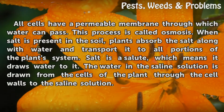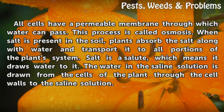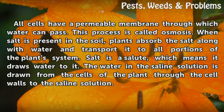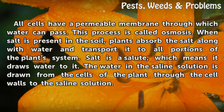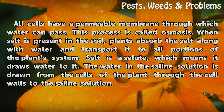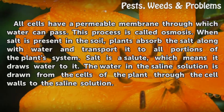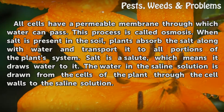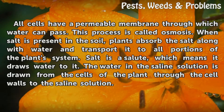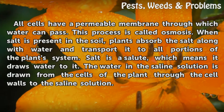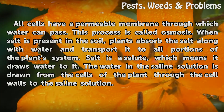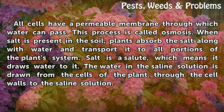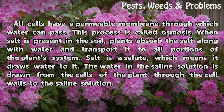All cells have a permeable membrane through which water can pass. This process is called osmosis. When salt is present in the soil, plants absorb the salt along with water and transport it to all portions of the plant's system. Salt is a solute, which means it draws water to it. The water in the saline solution is drawn from the cells of the plant through the cell walls to the saline solution.